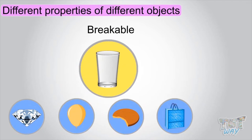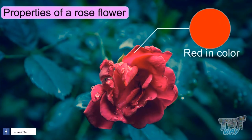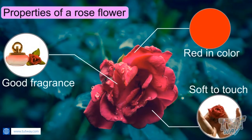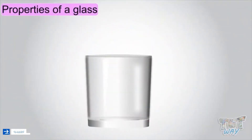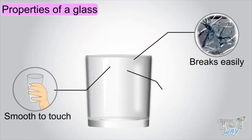Let's take some examples. Let's see the properties of a rose flower. It is red in color, soft to touch, and has a good fragrance. Now let's see properties of a glass: smooth to touch, breaks easily, and transparent.